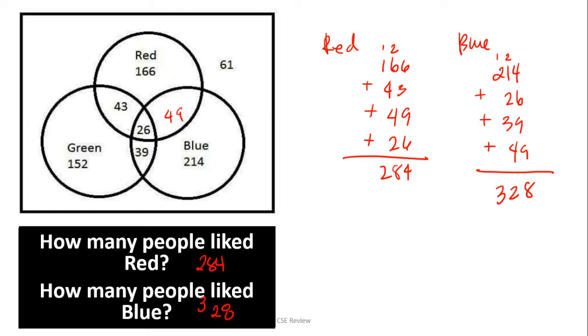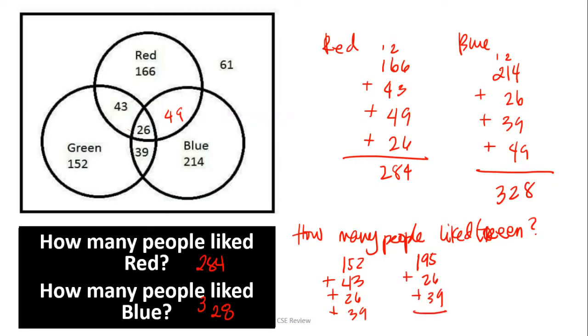How many people like green? I'm going to ask you to hit pause now for practice. The question is: how many people liked green? Alright, let's see if you got it right. Again, the green circle includes all of these numbers. So how many people like green becomes 152 plus 43 plus 26 plus 39. You can combine this to make life easier. That is 195 plus 26 plus 39. So how many people like green, that is 260. That is all of these.